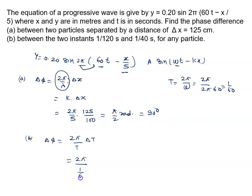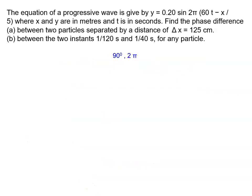T ki jagah hum log 1 by 60 likhenge. Delta T dono ka difference likhoge: 1 by 40 minus 1 by 120. Finally we will solve it, it will be 2 pi. The final answer of this problem is 90 degree and 2 pi.